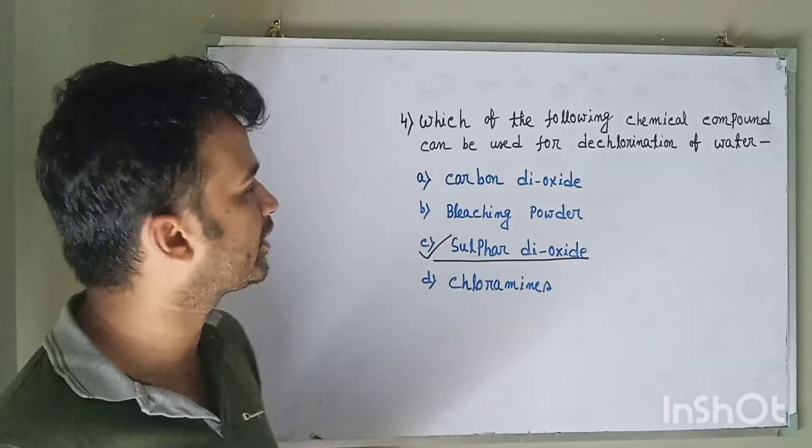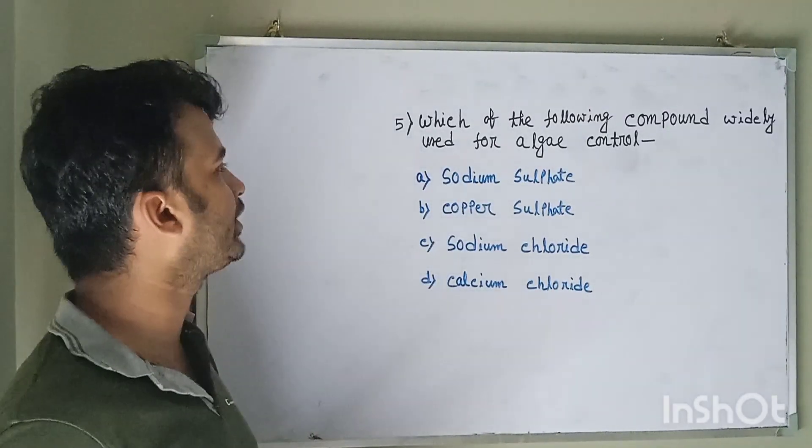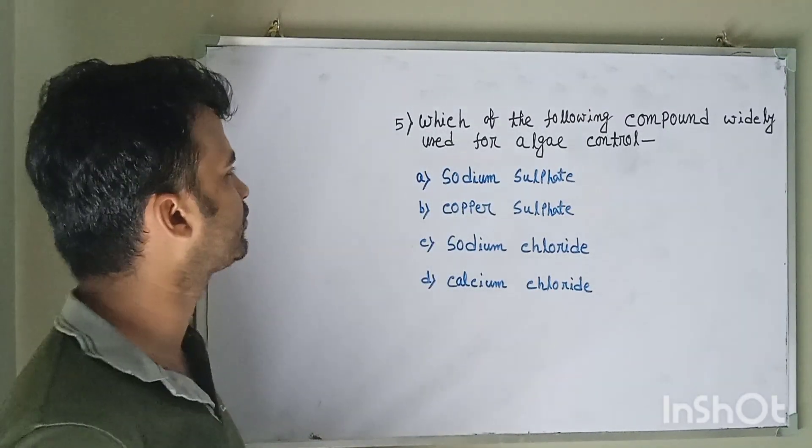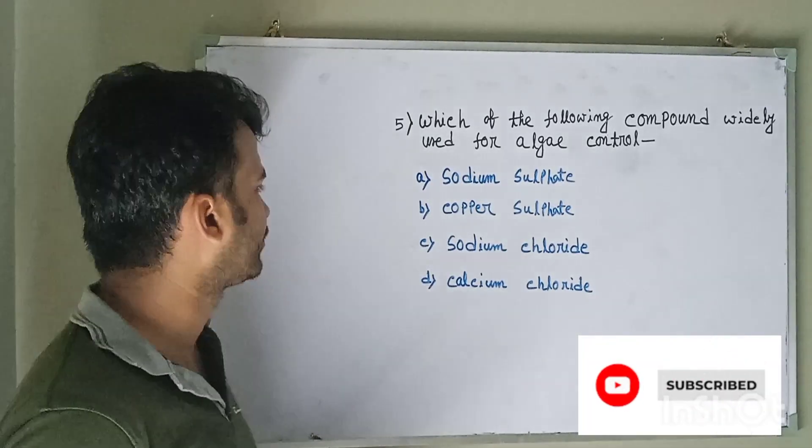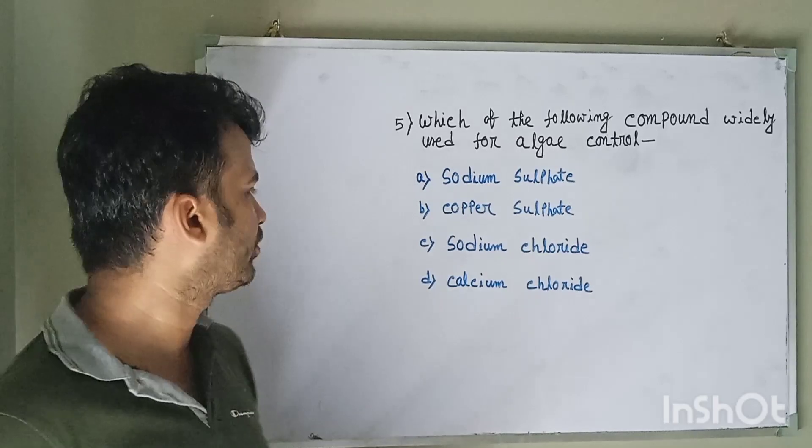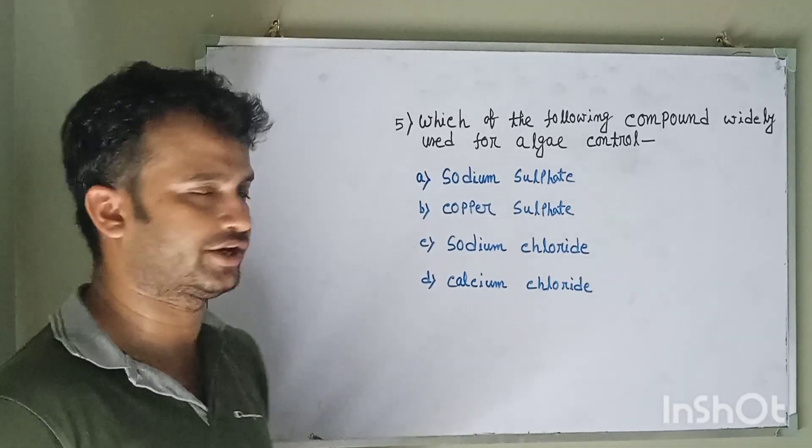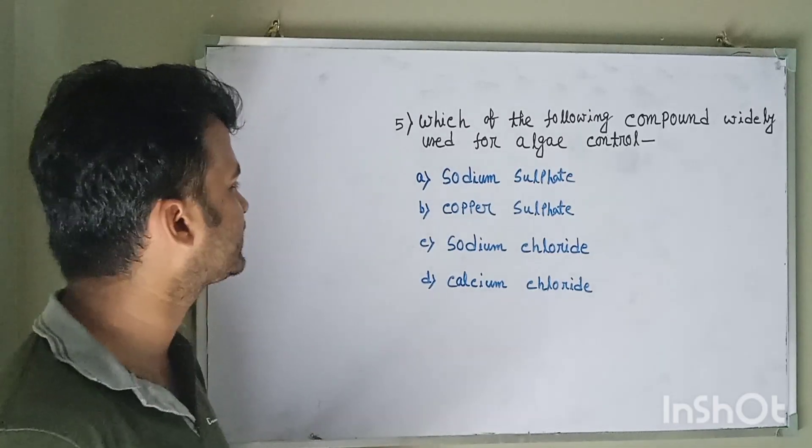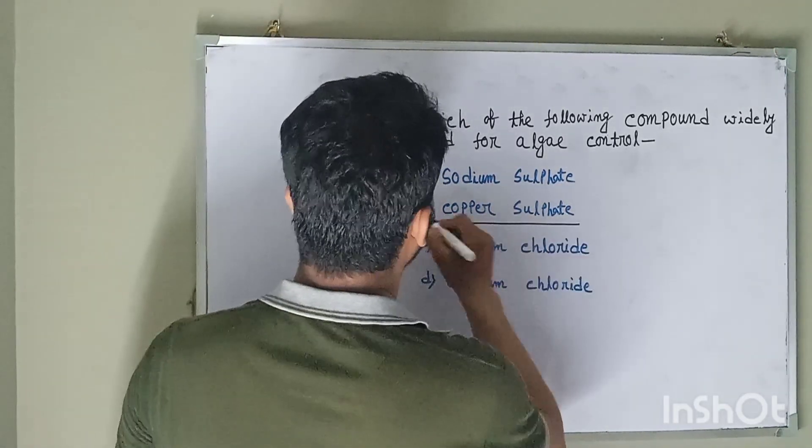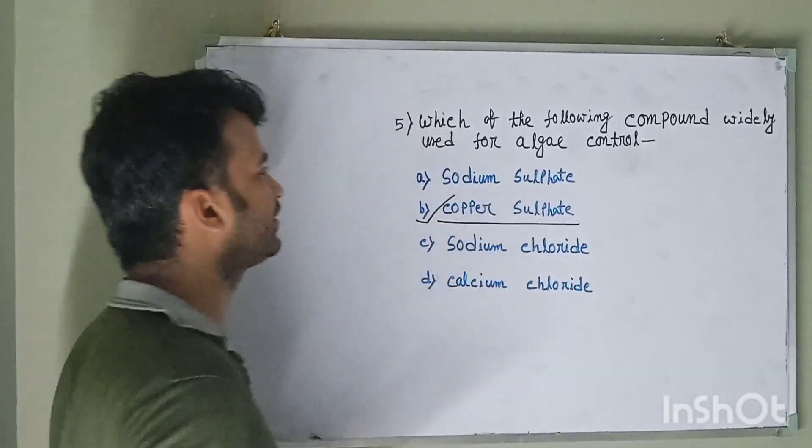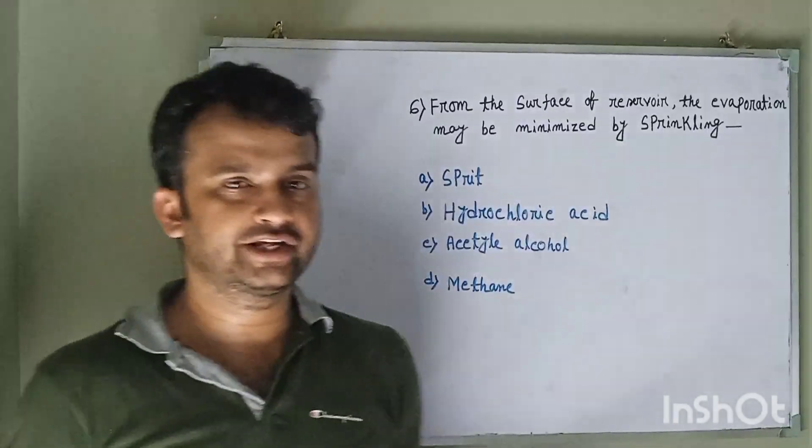Question number five: Which of the following compound is used for algae control? Option A sodium sulfate, option B copper sulfate, option C sodium chloride, option D calcium chloride. The correct answer is copper sulfate. Option B copper sulfate is used to control algae.